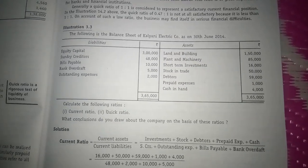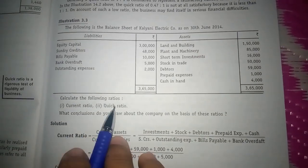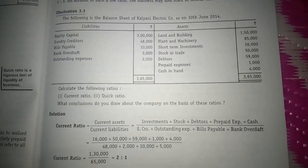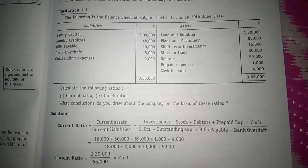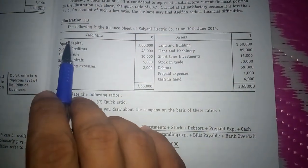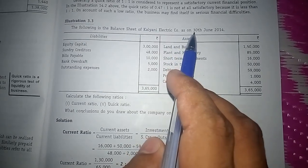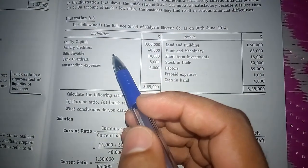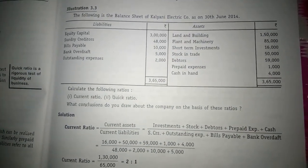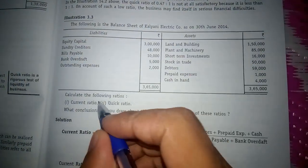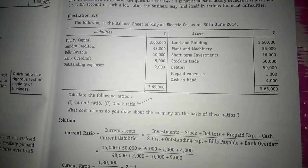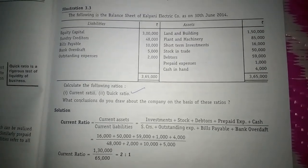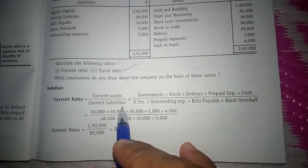Hello students, today let us understand how to calculate current ratio and quick ratio. Here they have given a balance sheet with assets and liabilities information, and by using that we need to calculate current ratio and quick ratio, which is very important for six marks. The following is the balance sheet of Kalyani Electric Company as on 30th June 2014. The formula for current ratio is current assets divided by current liabilities.